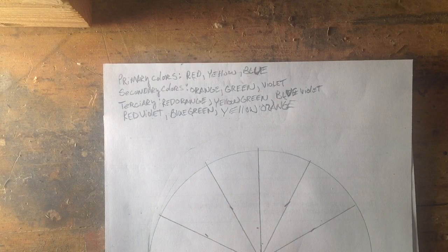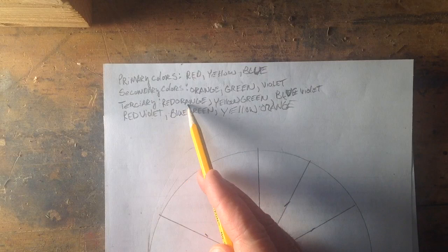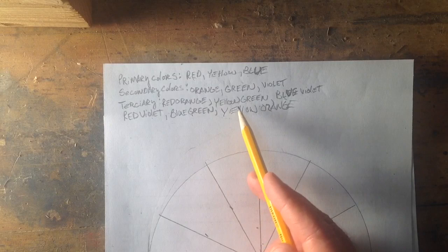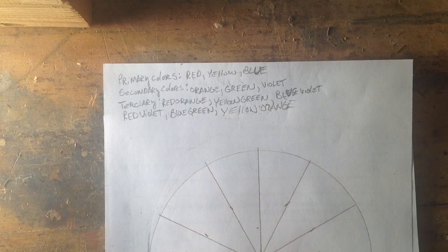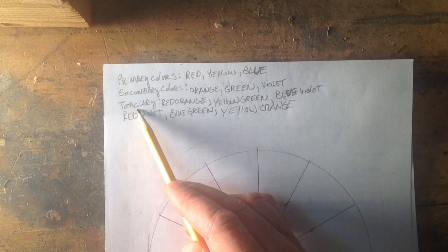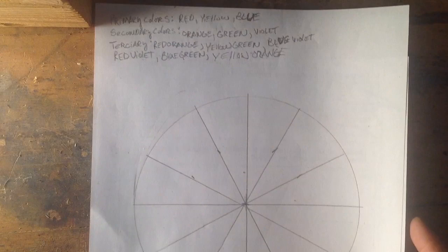Tertiary colors are where a primary and a secondary are next to each other on the wheel. So where red and orange are next to each other you're going to get a red orange, yellow and green next to each other you'll get yellow green, blue and violet give you blue violet, red and violet give you red violet, blue and green give you blue green, and yellow and orange will give you yellow orange. There's six tertiaries, three secondaries, and three primaries giving us twelve total.